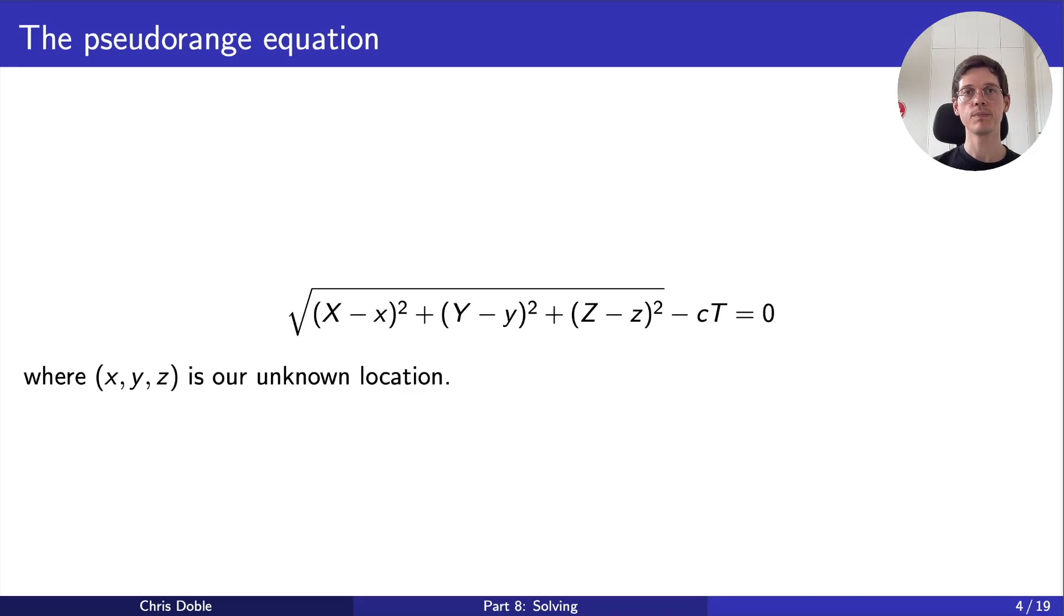One thing I brushed over is how we actually calculate the transit time, capital T. We know when we received the signal, and the GPS spec tells us how to calculate when it was transmitted. So isn't it just a matter of subtracting one from the other? Well, that assumes that our clock and the satellite's clock are synchronized. Unfortunately, that might not be the case. If our clock is ahead of the satellite's, that'll make transit time seem longer. If it's behind, it'll seem shorter. Even if it's a one millisecond difference, that corresponds to a distance of 300 kilometers, in which case our equation definitely won't hold, so we need to account for this.